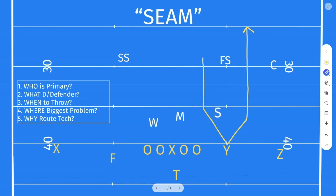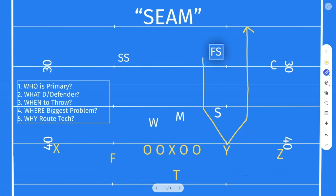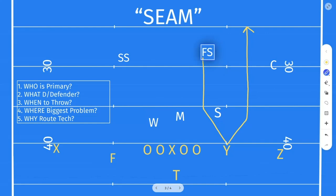We're going to seam inside to move this guy or to get better leverage and a cleaner release. We're seaming inside so we can gain leverage on this safety or force him to move in with us. Once we push inside and go vertical, we never want to chase back out to the safety — we never want to take away the advantage we already had. The seam gave us an advantage between us and the safety, so now if he wants to cover me he's got to move to cover me.